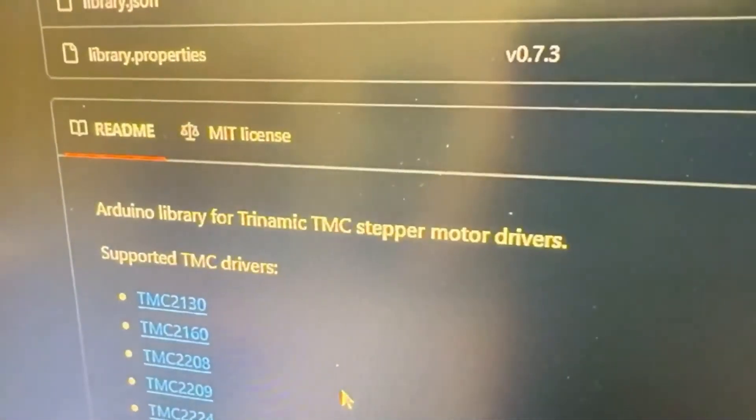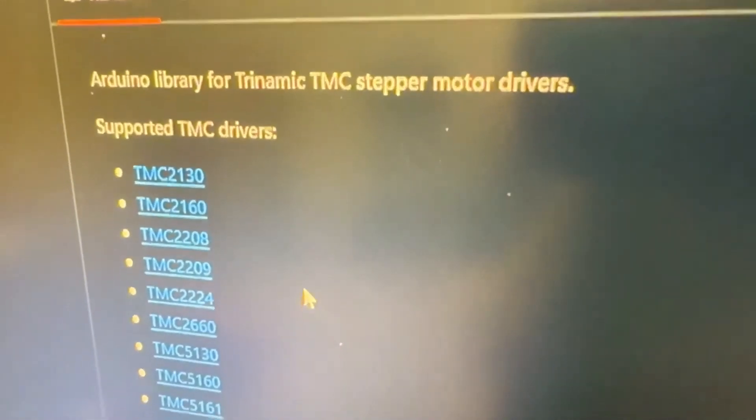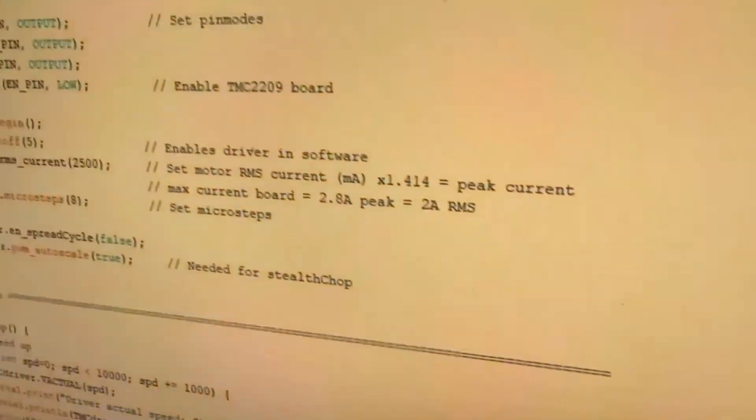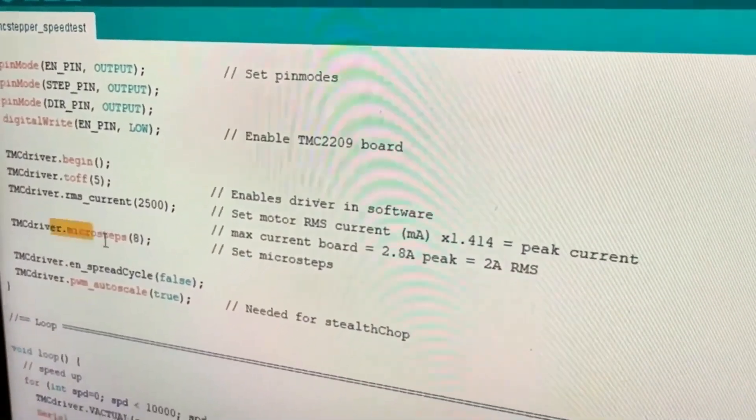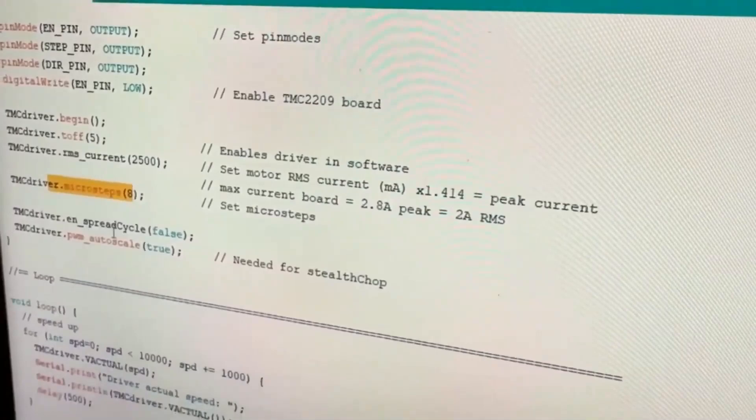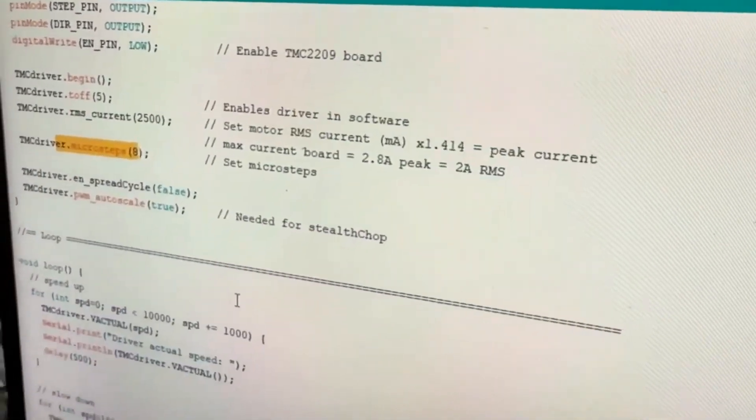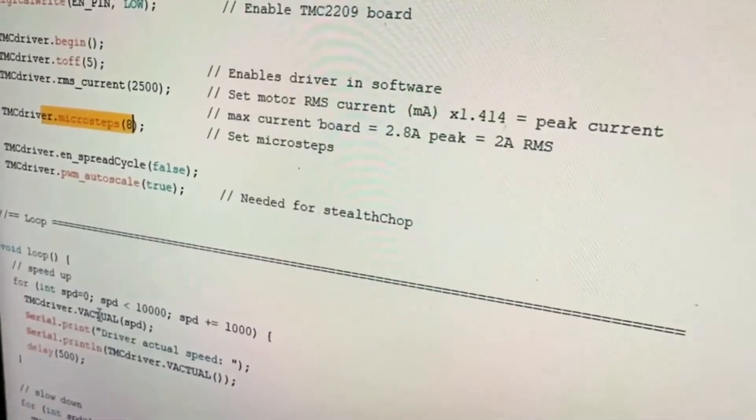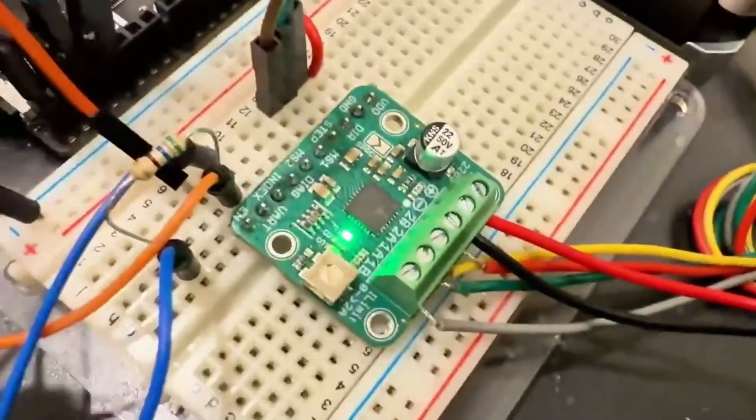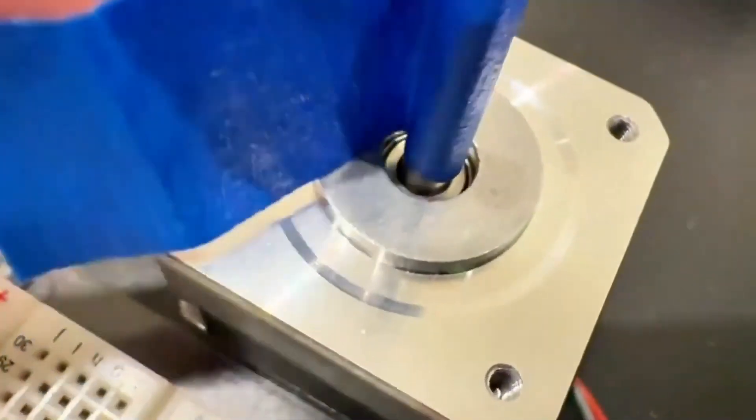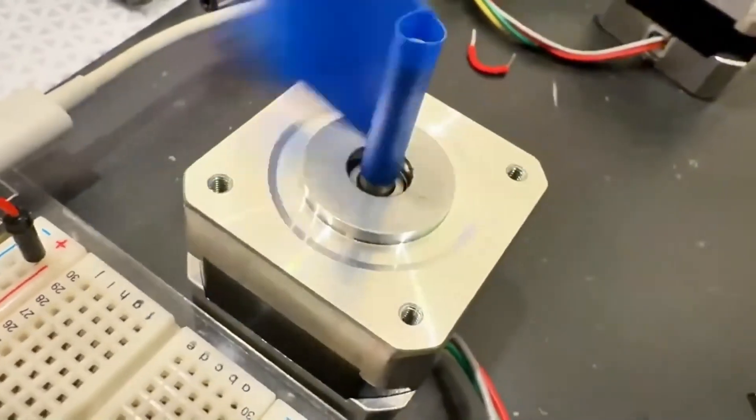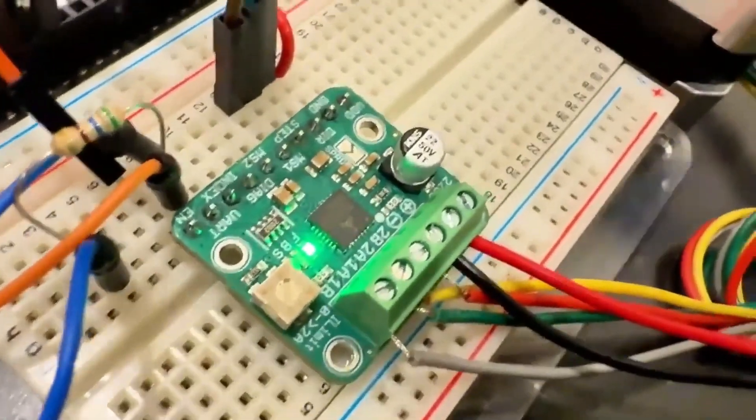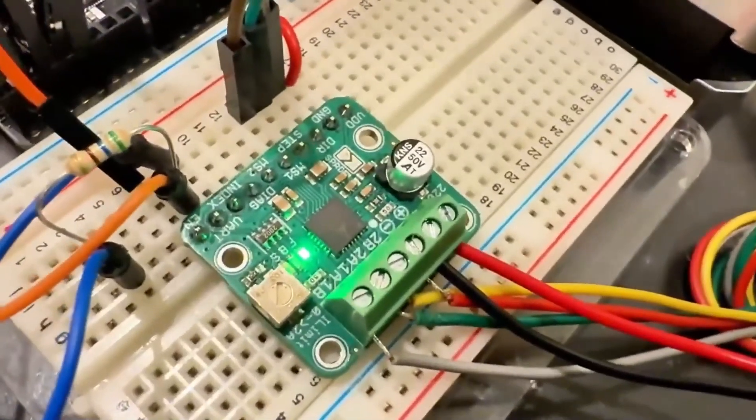And then I'm running this library called TMC Stepper, which seems to be fairly popular. And basically, it's just like the code that runs all these TMC Trinamic driver chips and lets you do stuff like, this is kind of neat. You can set the current limiting, you can set the micro steps over UART, and then some other things like spread cycle and PWM scale. And then you can set the velocity over the UART.